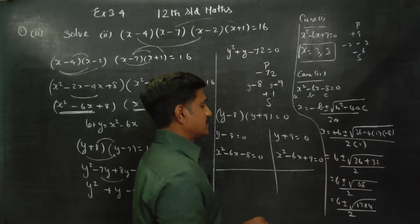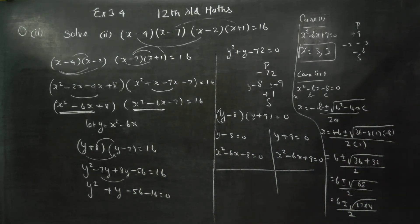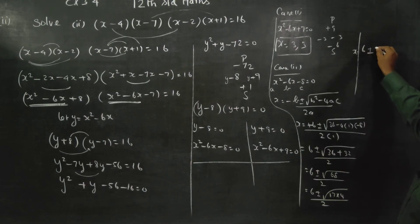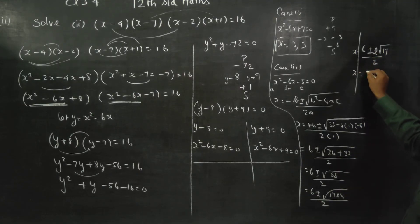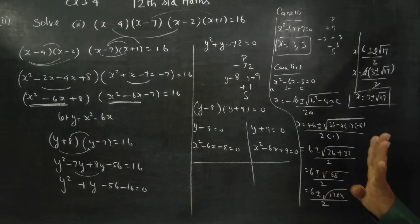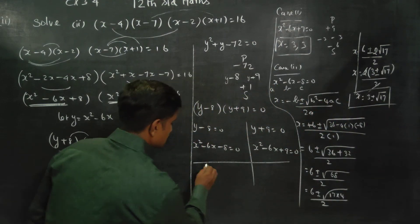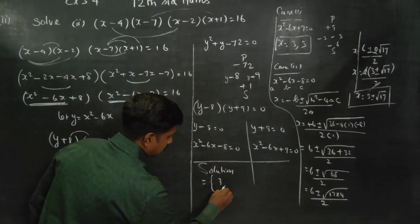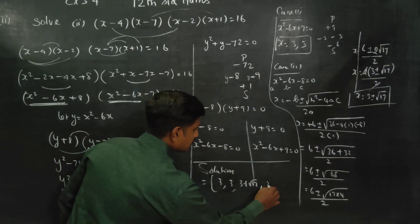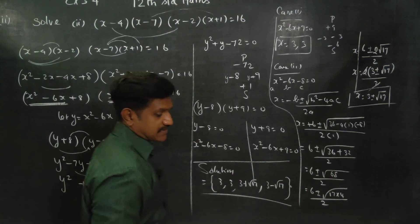68 can be written as 17 into 4. When we take root of 4, we get 2. So 6 plus or minus 2 root 17, by 2. 2 is common, giving 3 plus or minus root 17. Now x is equal to 3 plus or minus root 17. Therefore my 4 answers are: x equals 3, x equals 3, x equals 3 plus root 17 by 2... cancel — the answers are 3, 3, 3 plus root 17, and 3 minus root 17. These are the 4 answers for this sum. Okay, thank you.